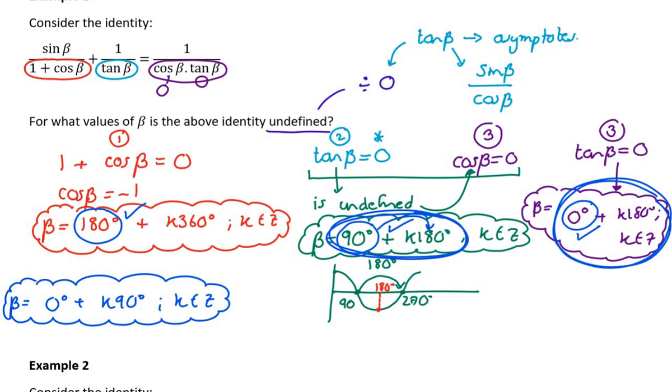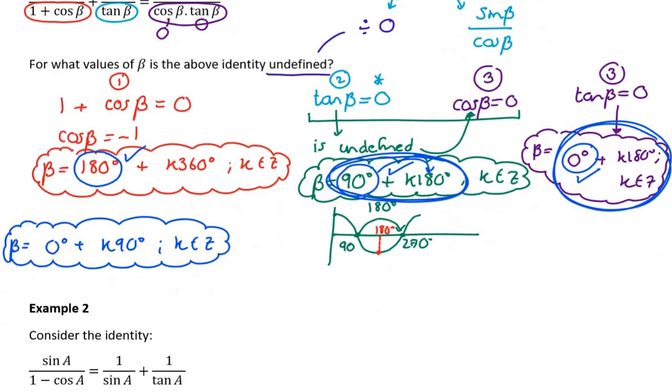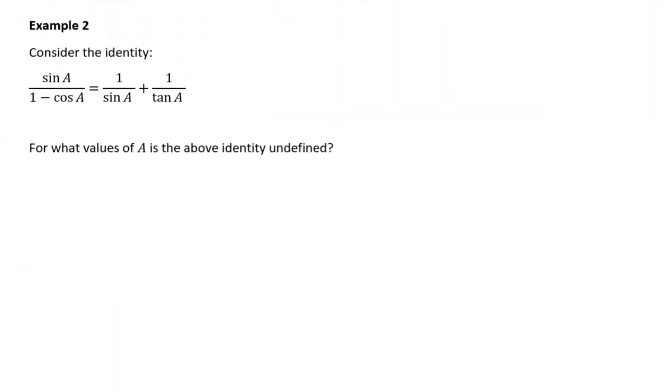Okay, now that was quite a complicated one. In an exam, I probably don't want to ask one that has so many different things to think about, because then it gets to being worth too many marks. Okay, let's just try one more. So consider the identity. In an exam, I'd probably ask you to prove that identity. And then I'll say, for what values of A is this identity undefined, or when does it not hold?